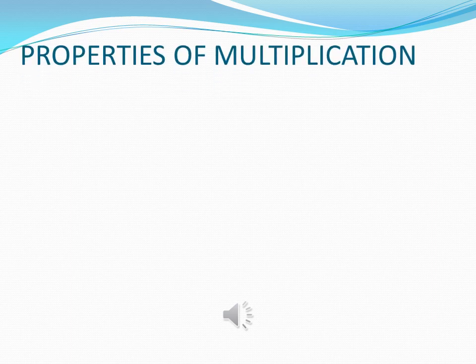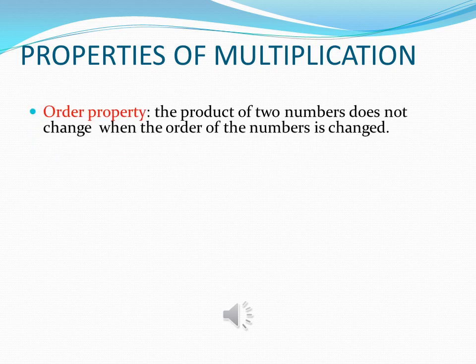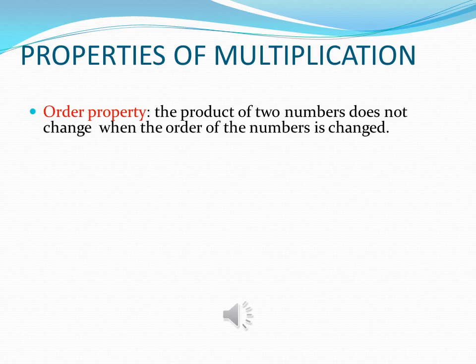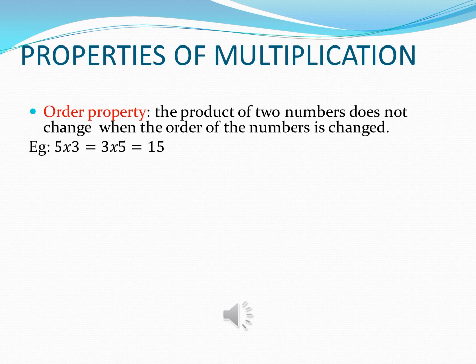Properties of multiplication. Property number 1, order property. It states that the product of two numbers does not change when the order of the numbers is changed. For example, 5 into 3 is equal to 3 into 5. That means both will give us the answer 15.